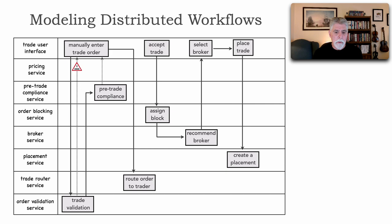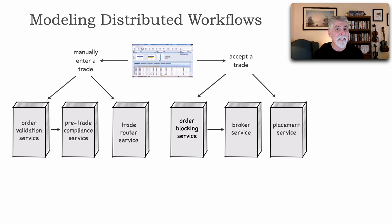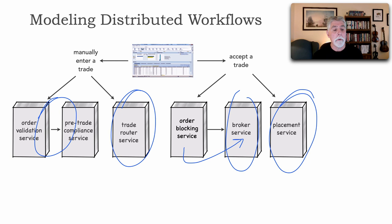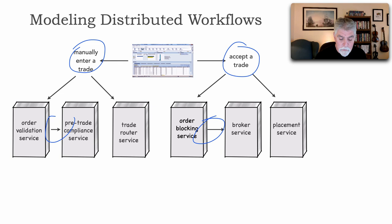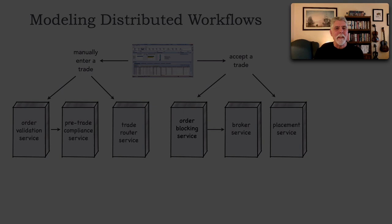But we can now take this artifact, this business automation model, and now model our enterprise system model. Now we have information about which services communicate with each other and which services are fairly standalone. And notice here the placement service is very standalone, as is the trade router service. The broker service doesn't communicate with anybody else, but the blocking service does communicate with it. And right here we have inter-service communication. Once an order is validated, it then communicates with pre-trade compliance. And here we can see, based on these two workflows, the interactions between the services. It's highly useful for being able to determine the coupling levels between the services.